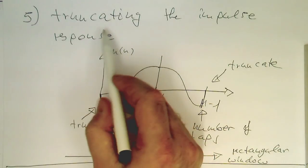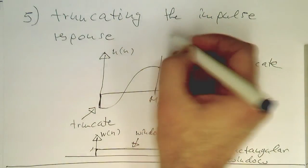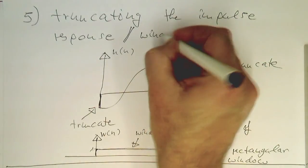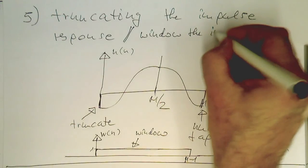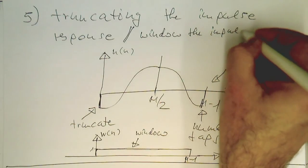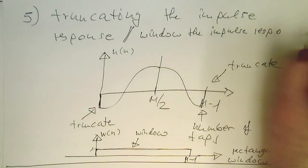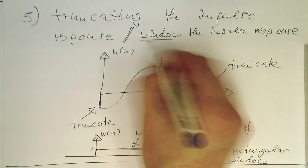For this reason, we can call it truncating the impulse response, or what we usually call windowing the impulse response. That's the so-called window method.